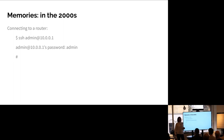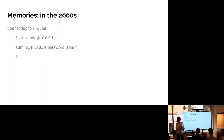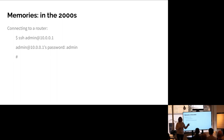My old memories from a long time ago: you had a network router and basically how you access it is you do SSH at admin at the IP address of the router, and the password is admin. That was a 99.9% chance of working with every different equipment. That was 20 years ago. And what is the current default of OpenEmbedded? I use rules.